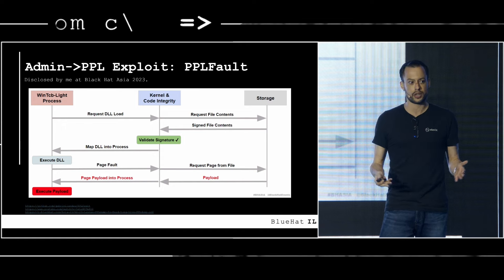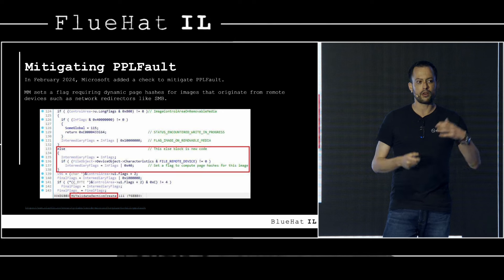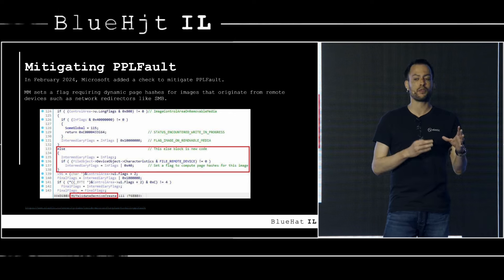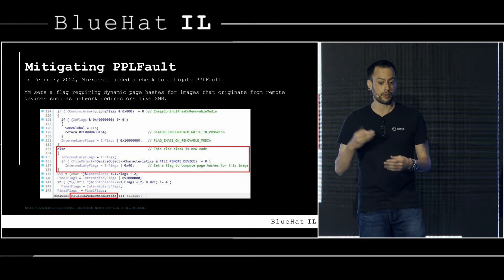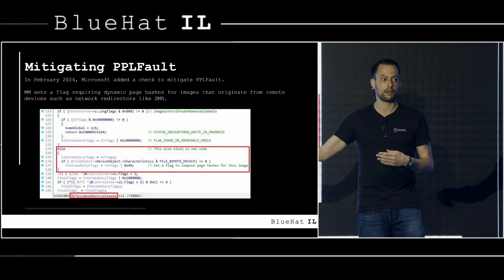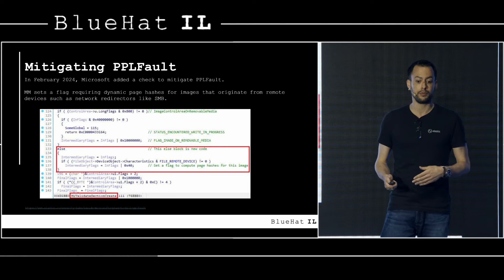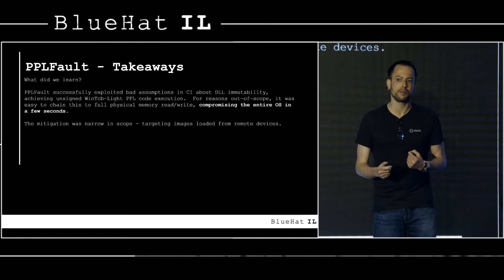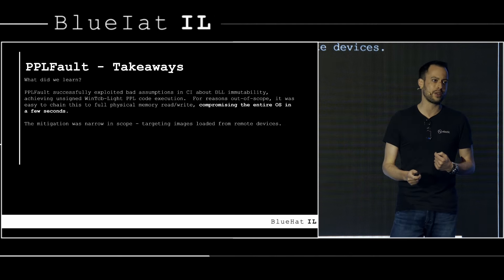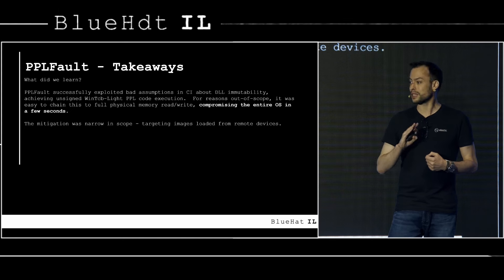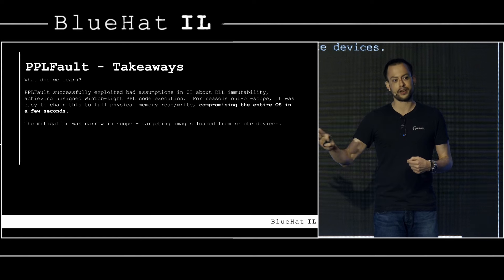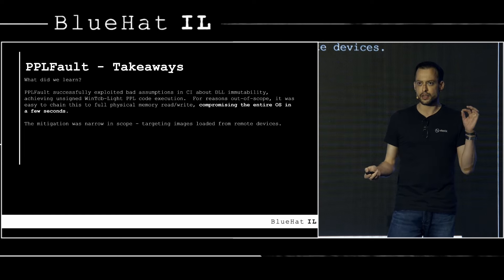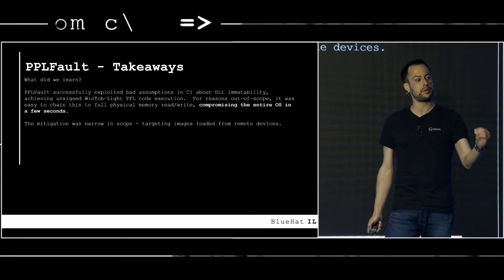As DllMain executes, page faults are sent to the attacker's storage device, and the original DLL is replaced with a shellcode payload, achieving arbitrary code execution as WinTcb Light PPL. In February of this year, Microsoft added a mitigation: they now enforce dynamic page hashes for images loaded over network redirectors like SMB. The mitigation was narrow in scope — targeting only images loaded over network redirectors — but for reasons outside this talk, it was easy using other non-security-boundary bugs to escalate to the kernel and achieve arbitrary read/write of all physical memory.